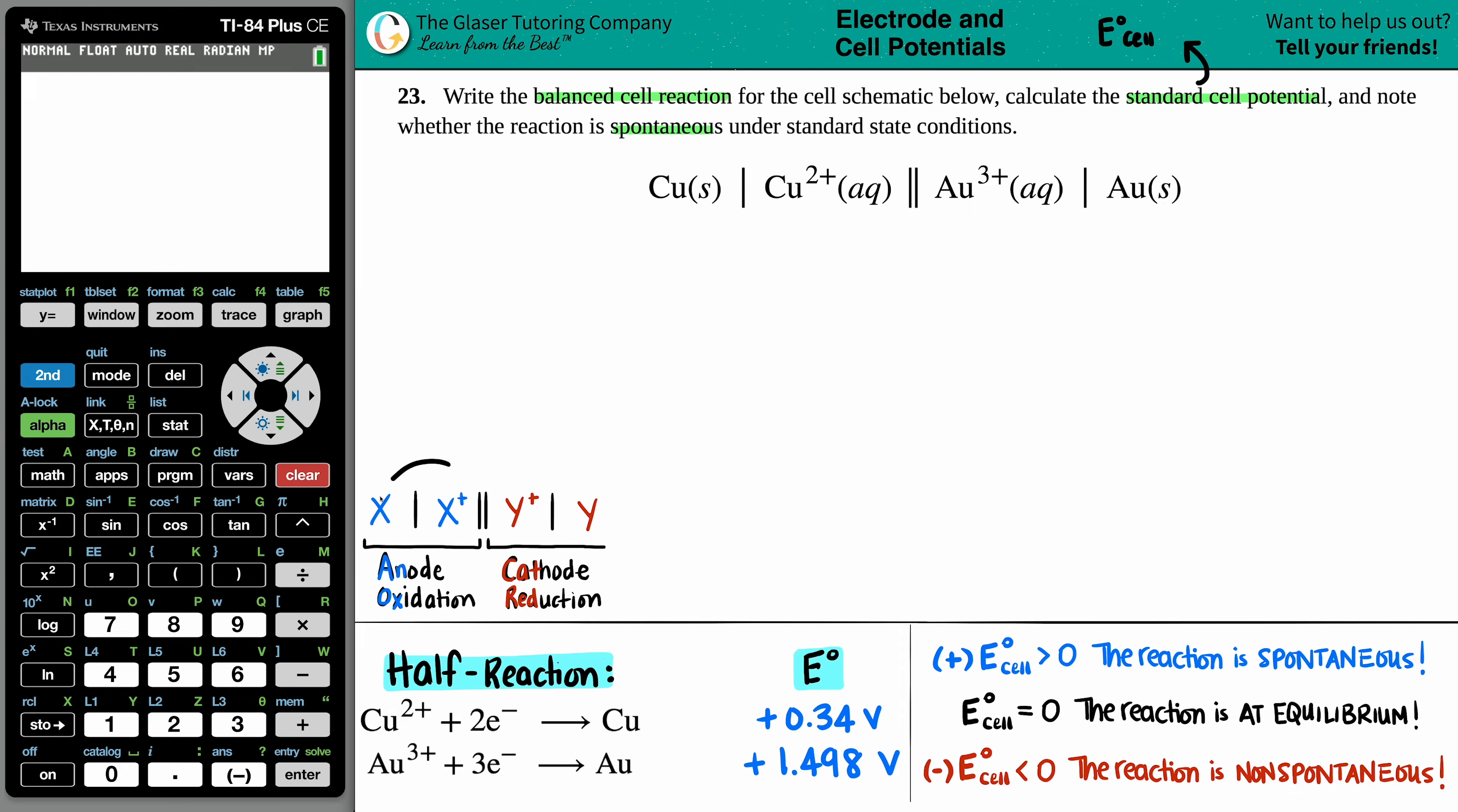Just remember that with your cell schematics, the anode is always going to be the one that's stated first and the cathode is the one that's going to be stated last. So in this case, since they talked about copper first, I know that this has to be the anode. Since the gold was talked about last, that's the cathode.